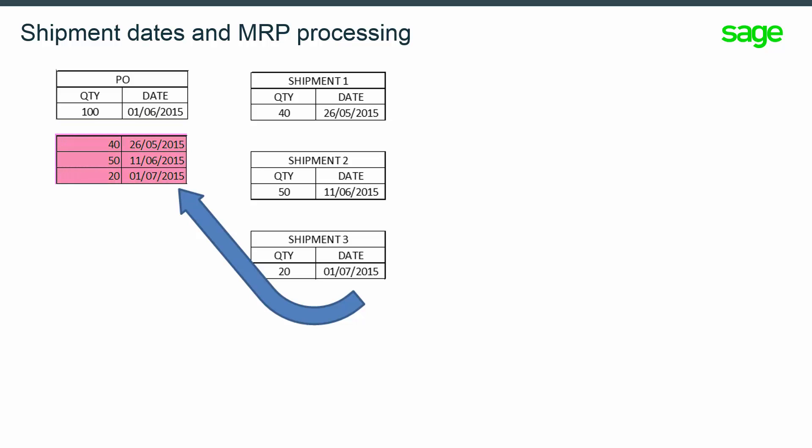This is a reminder of the existing management and not a new feature, but it is important to understand when using the stock replenishment process. Shipment records don't generate records in the orders table, but are related to the POF quantities, which are split to match the shipment's information during the MRP process. In this example, the PO line is assigned to three shipments. The projected stock calculated by MRP will consider stock available according to the shipment quantities and dates: 40 units available on the 26th of May, 50 units on the 11th of June, and 20 units on the 1st of July. The same logic will apply upon statistical reordering such as ROP.